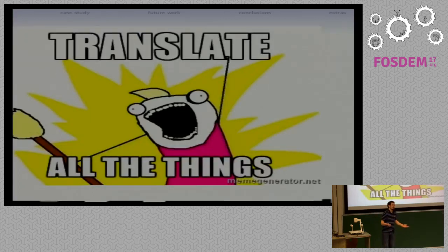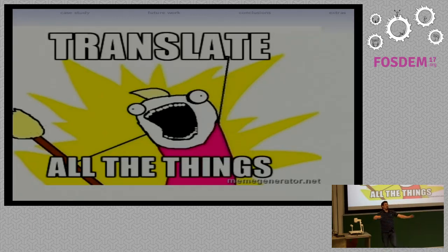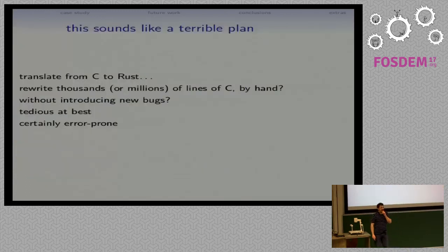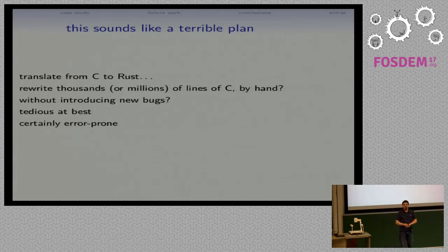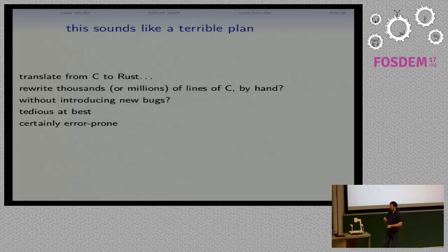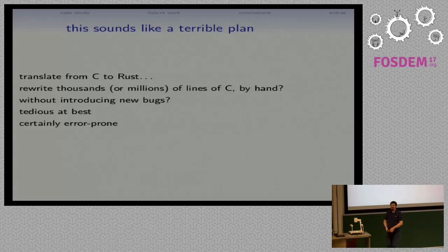So maybe we should try to rewrite everything that's in C. This is clearly a great language — let's just rewrite everything in Rust. Except if you start actually thinking about it, maybe this is not such a great plan. We've got small projects with maybe thousands of lines of C, ranging up to bigger projects with millions of lines of C. If you go and try to hand-rewrite all of that code, you're not going to get it right. You're going to introduce new bugs that were never in the C version, and at best it's still going to be a super tedious process.